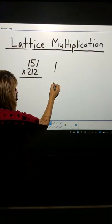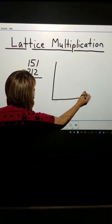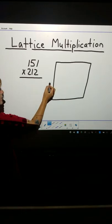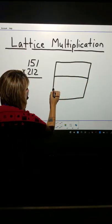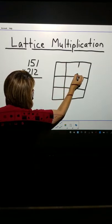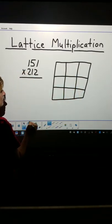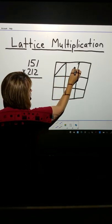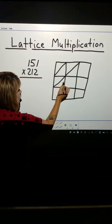I'm going to make a larger box because now I have 3 digits in each number. So, I need to have 3 vertical sections and 3 horizontal sections. I'm going to divide them all. Again, top, right, to bottom, left, diagonally.